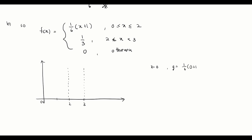For the first point, when x = 0: y = (1/6)(0+1) = 1/6, giving the point (0, 1/6). For the second point, when x = 2: y = (1/6)(2+1) = 3/6 = 1/2, giving the point (2, 1/2). We connect these two points with a straight line, completing the first interval from 0 to 2.